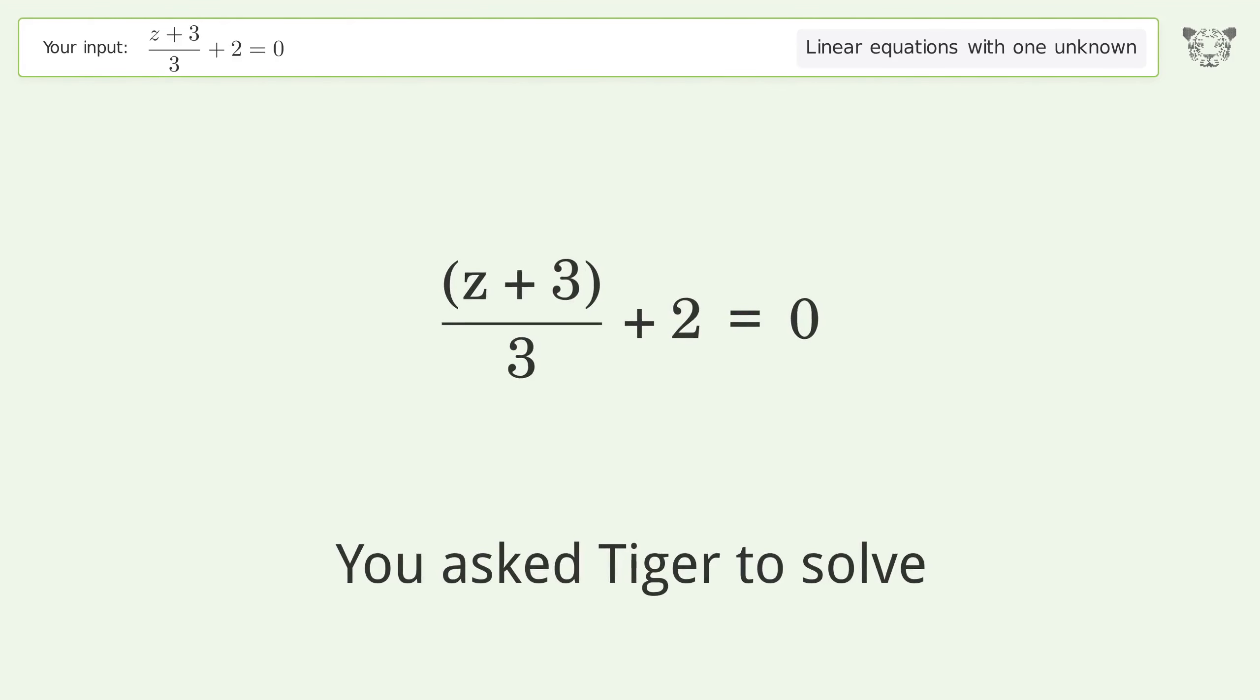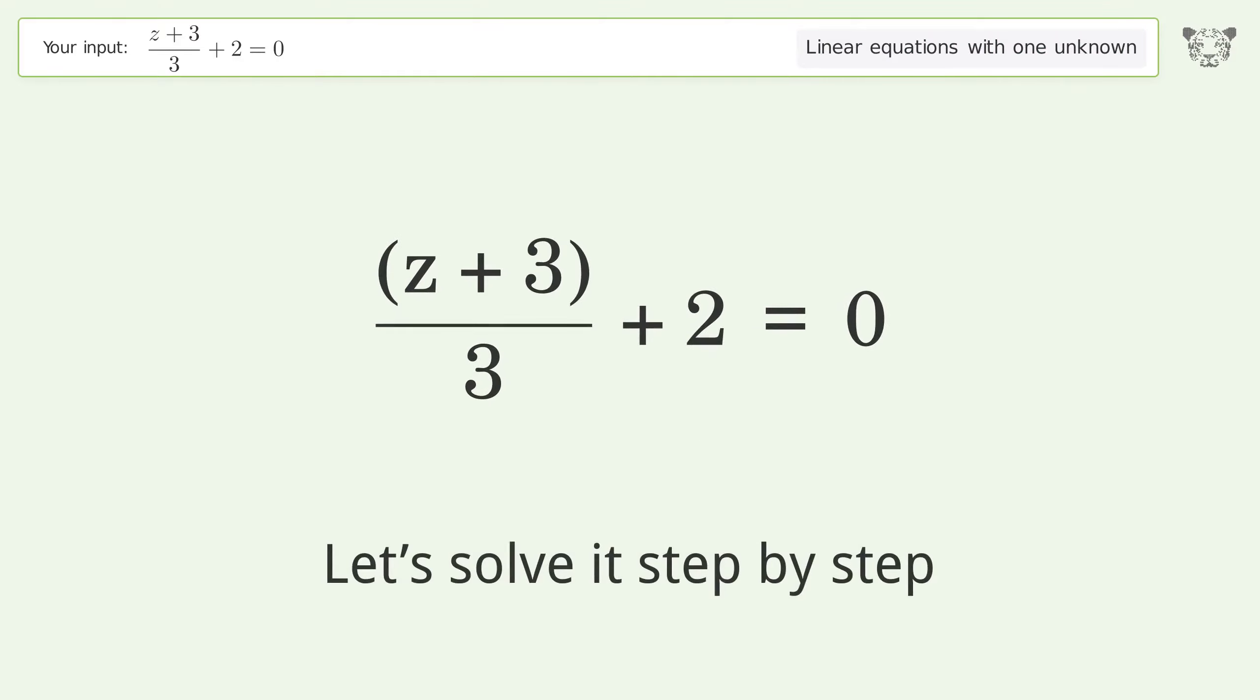You asked Tiger to solve this. It deals with linear equations with one unknown. The final result is z equals negative 9. Let's solve it step by step. Simplify the expression. Break up the fraction.